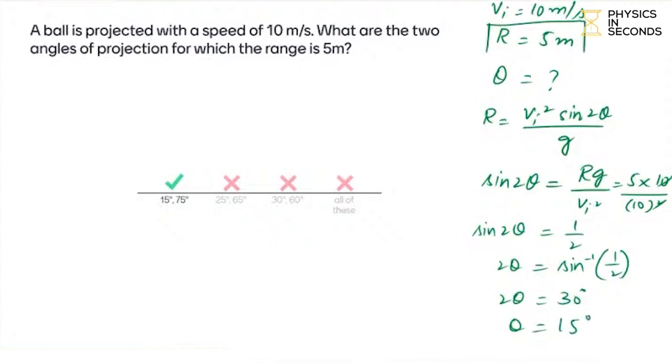This means that the range of 5 meters is at 15 degrees. Now which angle is 15 degrees? We have two angles.